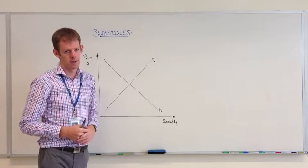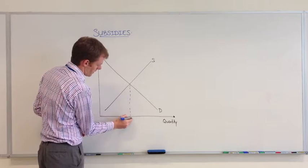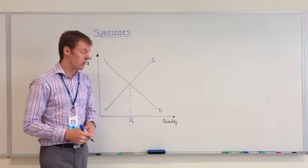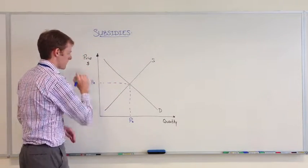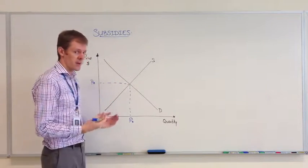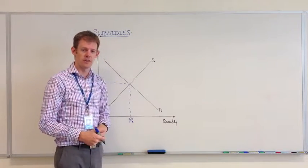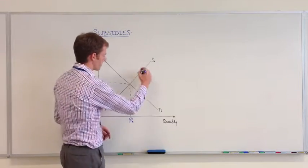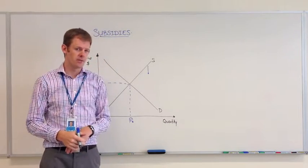We have our original supply curve here. This is the original equilibrium quantity and the original equilibrium price. We want to do two things: lower this price and simultaneously increase the quantity of these products that's demanded. The easiest way for governments to do this is to increase the supply.